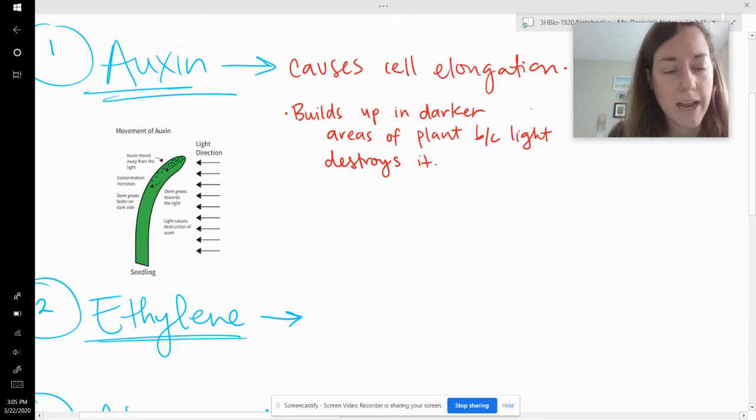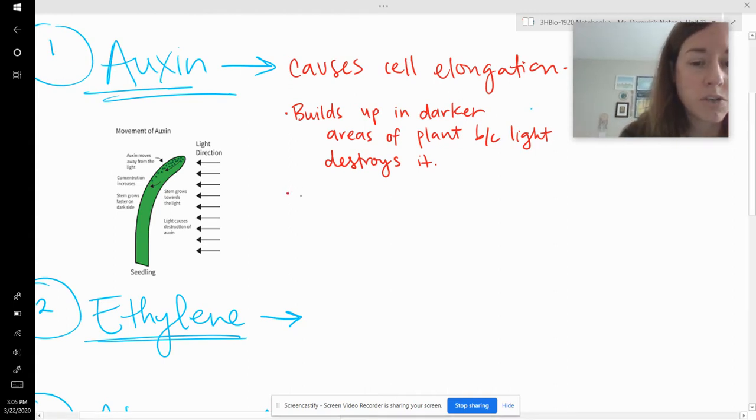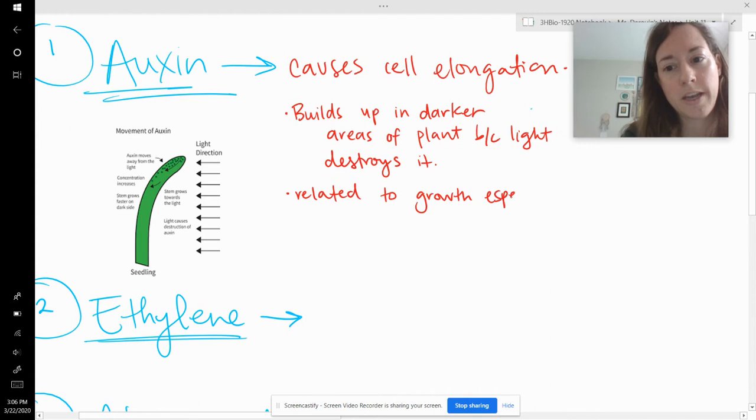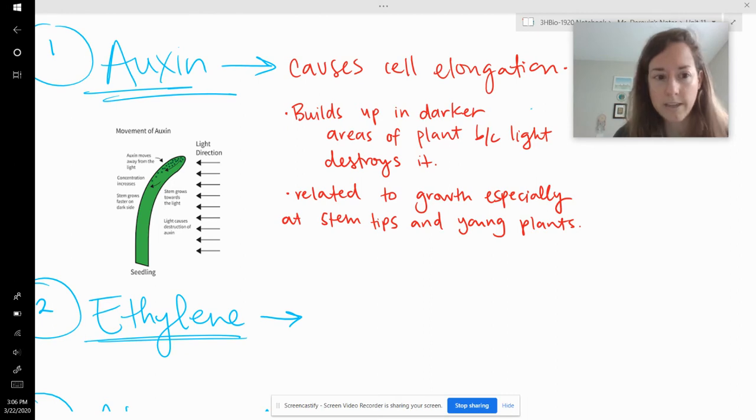And so what happens is that those cells that are on the dark side of the plant end up getting longer and that sort of bends the plant in the direction of the light, which you might have seen before if you've grown new seedlings, so grow towards the light. And what's causing that is actually auxin. So auxin is related to growth, especially at stem tips and young plants. That's auxin.